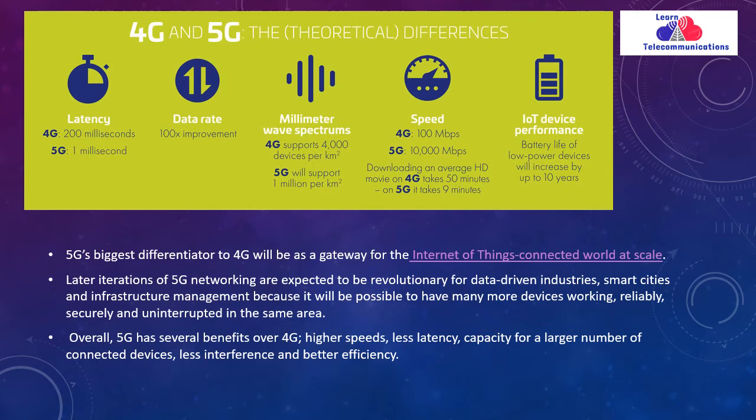As an example, downloading an average HD movie — on a 4G network it takes approximately 15 minutes, whereas on 5G it takes 9 minutes to download the entire movie. One of the biggest differentiators is that 5G is a gateway for the Internet of Things (IoT) devices.